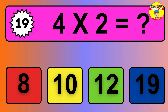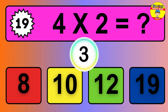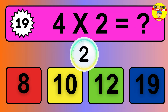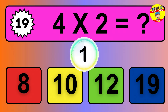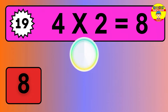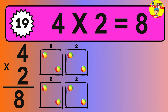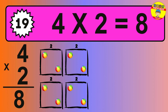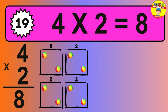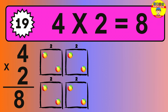Question 19. 4 times 2 equals what? The answer is 4 times 2 is 8. To calculate, we have 4 groups with 2 balls each one. So how many balls do we have? 8 balls.